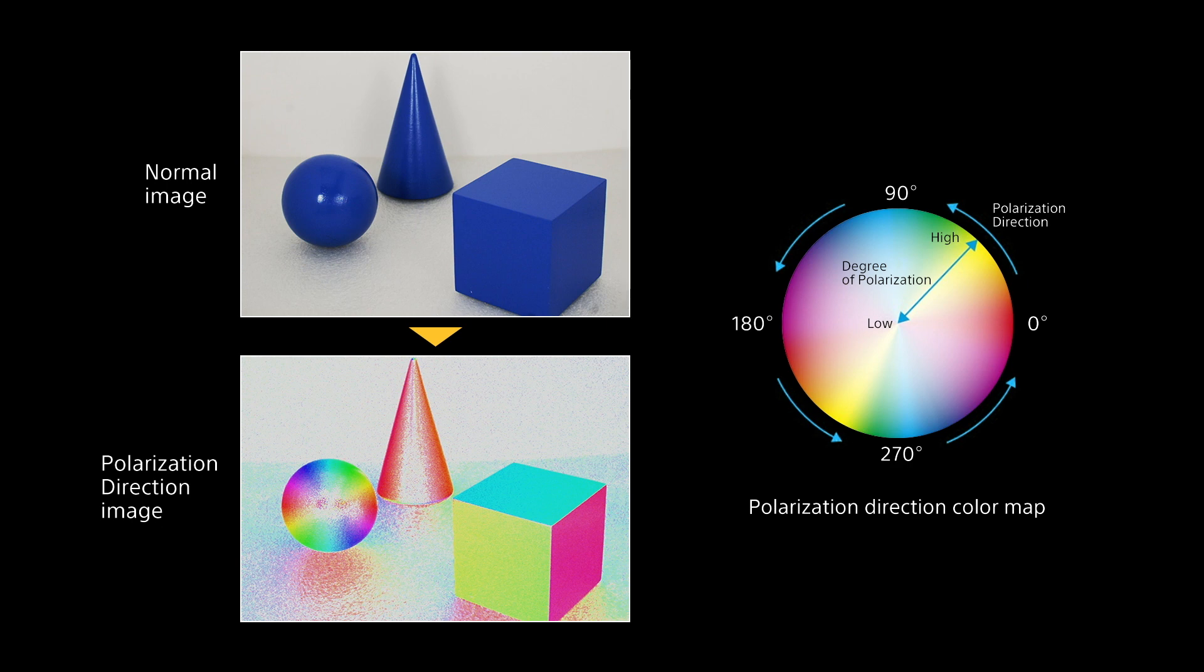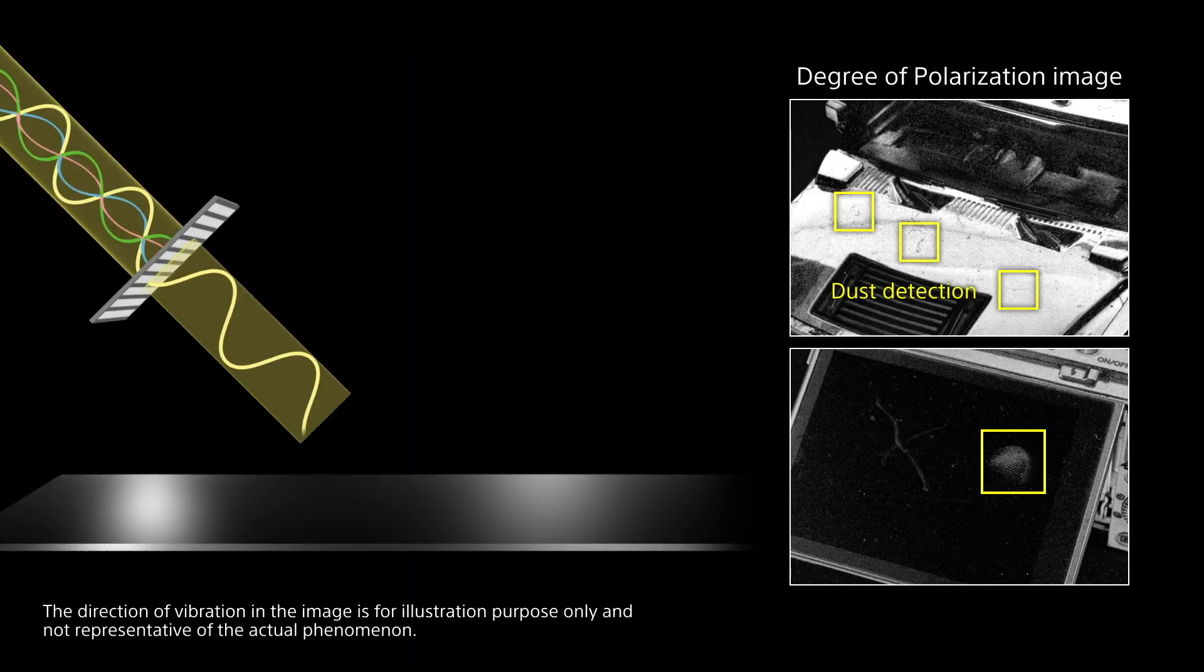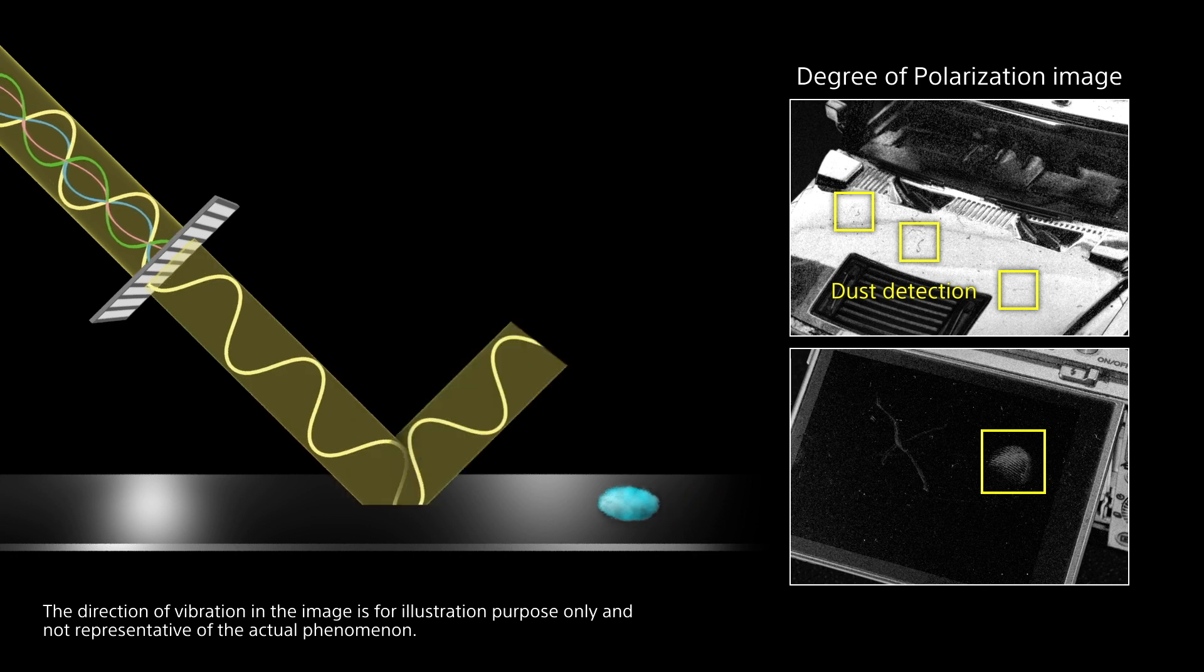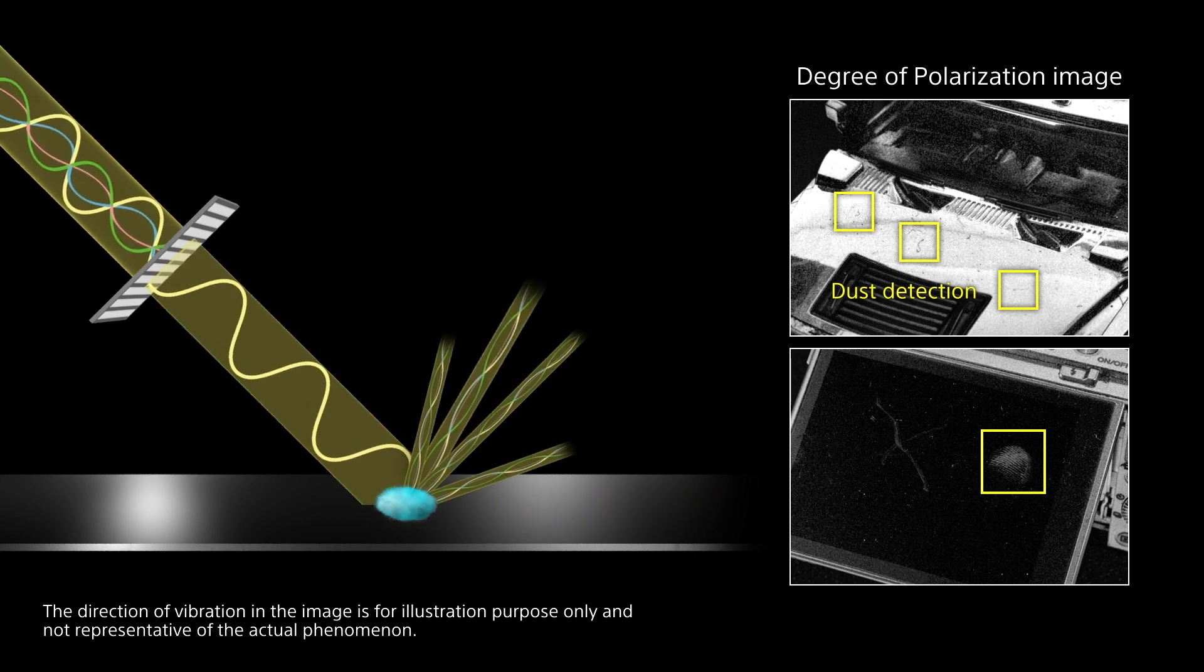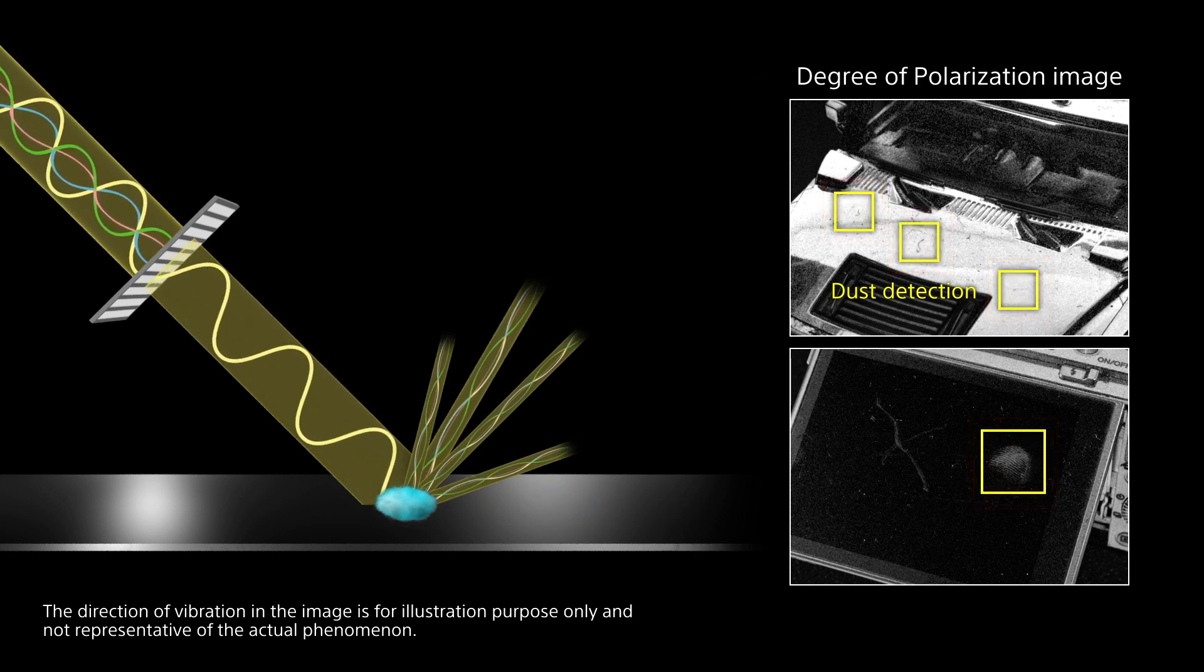By using the HSV colour mapping, we can easily see the direction of polarisation. Different colours represent different directions. For example, scratches and dents will be seen due to the difference in the degree of polarisation.